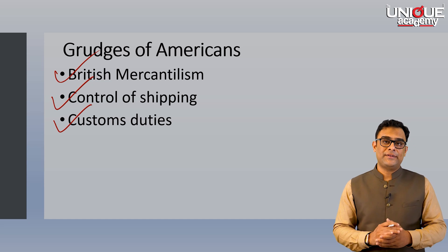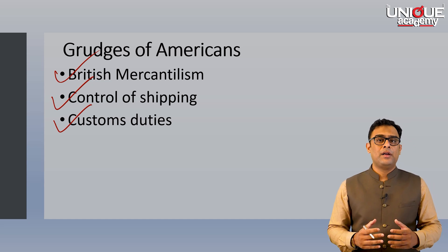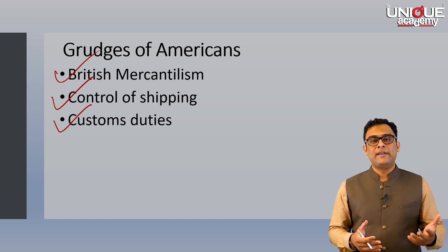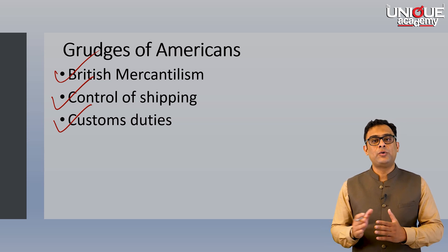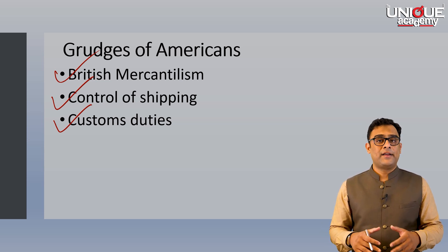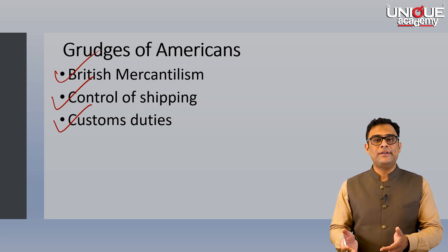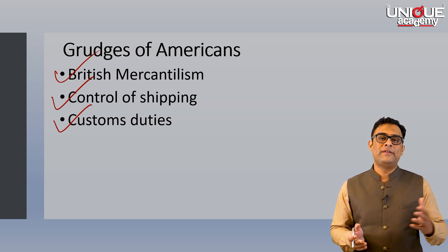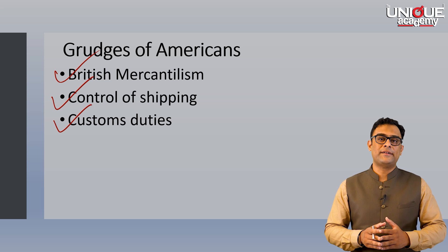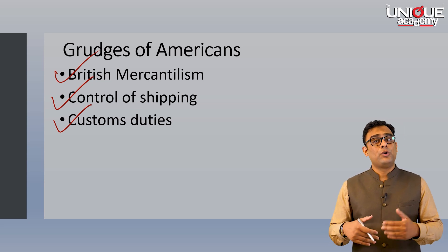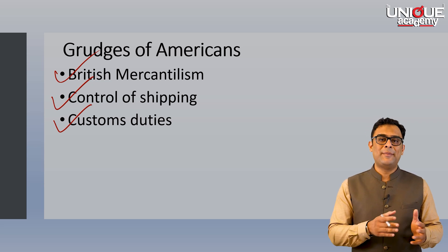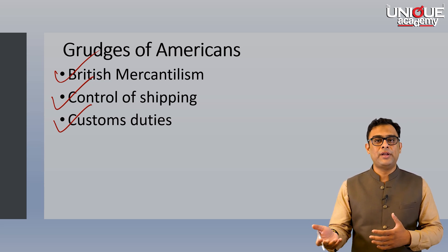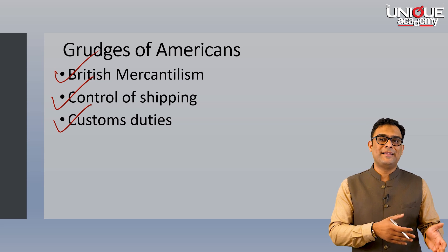The third issue was custom duties. All goods supposed to be sent to the American colonies had to be first routed to British ports. Customs duties were levied on these goods before they could be sent onwards to the colonies. This not only increased the cost of goods but was also a loss to Americans, since that custom duty could have very well been earned by these colonies.